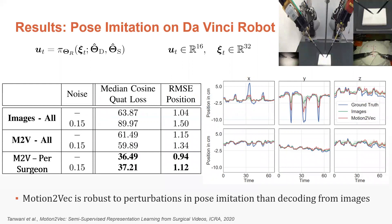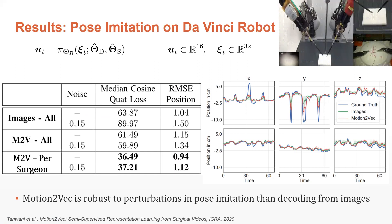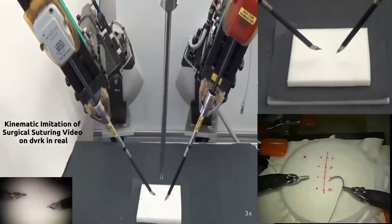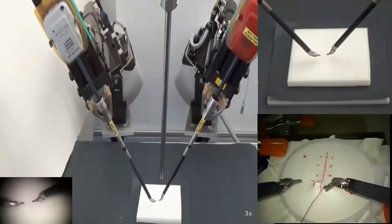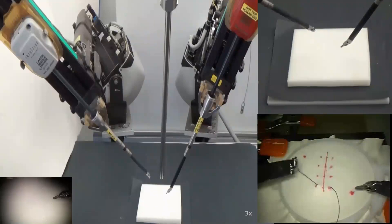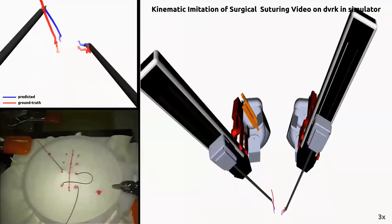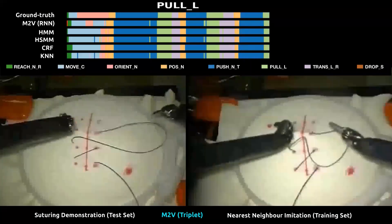The pose imitation results suggest that we get comparable performance of Motion-to-Vec versus decoding from raw images in terms of the cosine quaternion loss and mean square error in tracking end-effector positions. However, Motion-to-Vec is more robust to perturbations in pose imitation than decoding from raw images alone. The video shows the kinematic imitation of a suturing video on the DaVinci robot arms. Note that we do not model contact dynamics with the needle and the suturing phantom and only imitate the suturing motions at the kinematic level. Motion-to-Vec projects a streaming video to the embedding space and subsequently decodes images to action segments and end-effector poses for imitating the suturing task.